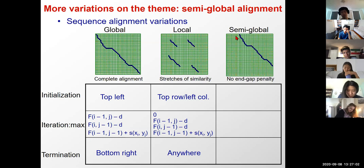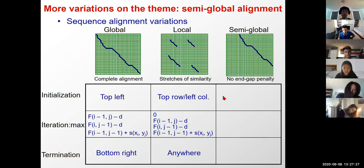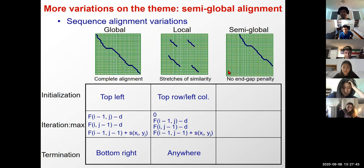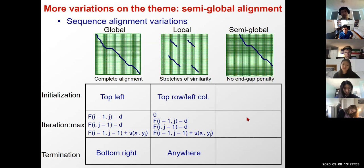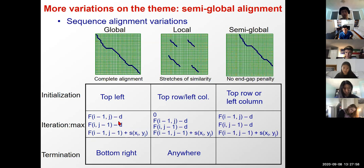For semi-global alignment, we don't want any end-gap penalty. We initialize anywhere on the top edge or left edge, terminate anywhere on the bottom row or right column, and the iteration is the same as for global alignment. We've taken this complex problem and by abstracting it into a matrix computation, we can create variations of our algorithm that are super easy to understand and rationalize.